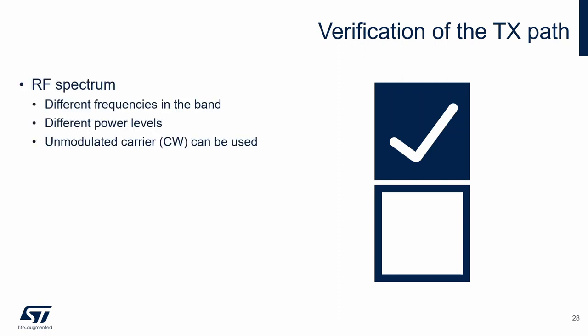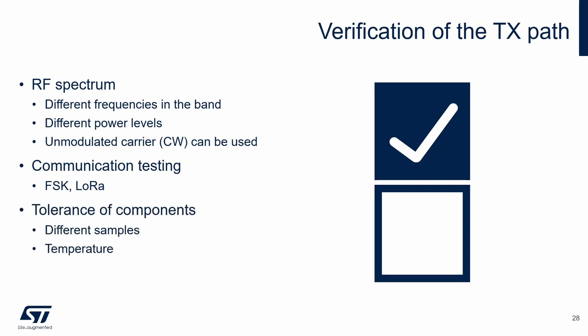The first one is the RF spectrum. In the example, we used one frequency and one power level. It is good to check the spectrum at different frequencies and power levels which can be used. The unmodulated carrier can be used for these tests. The next step may be to test radio communication — whether the FSK or LoRa modulated signal works as expected. Tolerance of components may also have an impact, so it is good to check parameters on different samples and the impact of temperature. The target environment can affect antenna parameters such as the radiation pattern, radiated power, and power consumption.